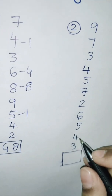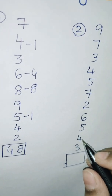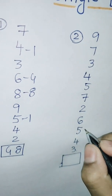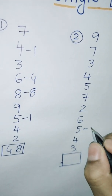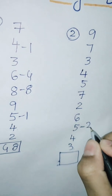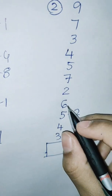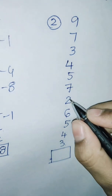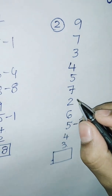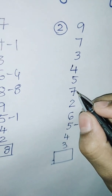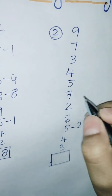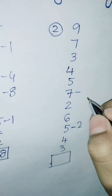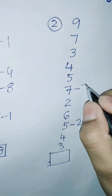The second sum. 3 plus 4 equals 7. 7 plus 5 equals 12. 12, it is 2. 2 plus 6 equals 8. 8 plus 2 equals 10. 10 plus 7 equals 17. 17, it is 7.